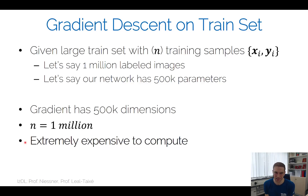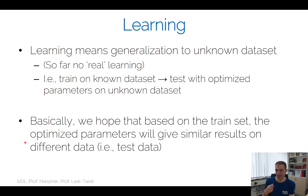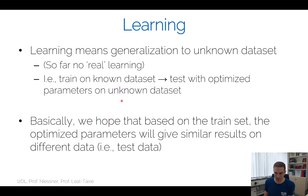So far we've only talked about the training part, not the actual learning part. Learning means generalizing to unknown data. We only fitted the neural network model to our training set — no real learning has happened yet. We train on the known dataset and test with the resulting parameters on an unknown dataset — typically our validation set, and at the very end, the test set.